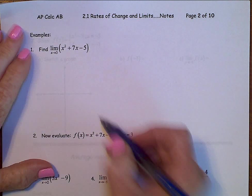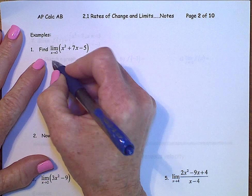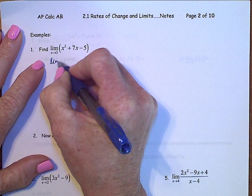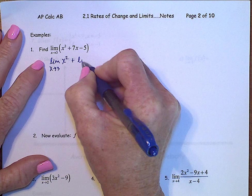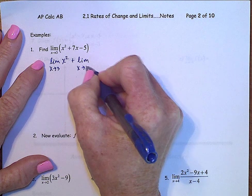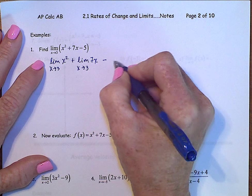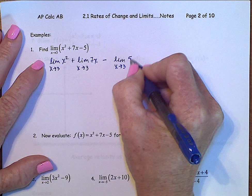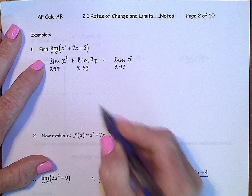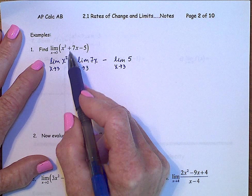And what that means is that I can rewrite this expression as the limit as x approaches 3 of x squared plus the limit as x approaches 3 of 7x minus the limit as x approaches 3 of 5. So I've separated these limits over the addition and the subtraction.